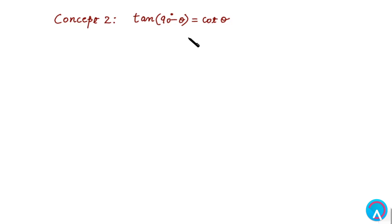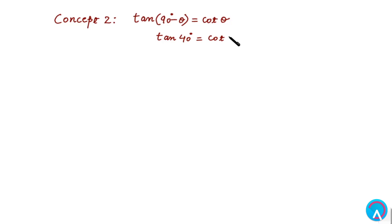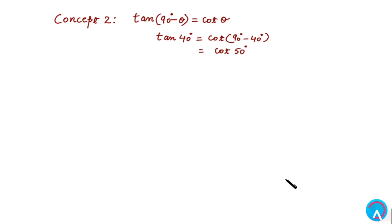The second concept which we will learn today is tan(90° - θ) = cotθ. What this means is that if we have tan40°, this will be equal to cot(90° - 40°) = cot50°. Based on this concept, let's take an example.